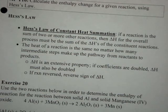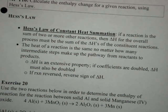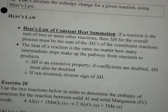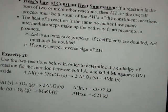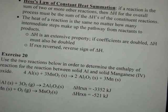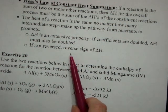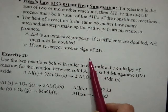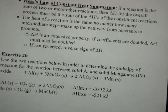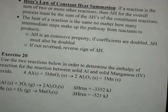Because enthalpy is an extensive property, we can manipulate it and do things to the equation, and that subsequently will alter the enthalpy. For instance, if you need to reverse the equation, then you just change the sign from positive to negative or negative to positive. If you have to double the reaction, then you double the enthalpy. If you have to half the reaction, then you half the enthalpy.